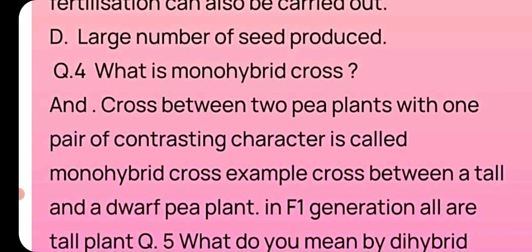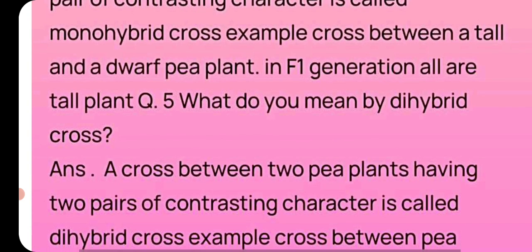Question number four: What is monohybrid cross? A cross between two pea plants with one pair of contrasting characters is called monohybrid cross. Example: A cross between a tall and a dwarf pea plant — in the F1 generation, all plants are tall.